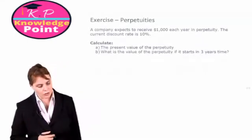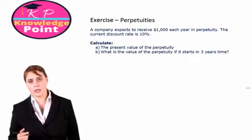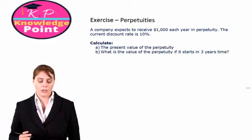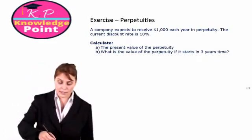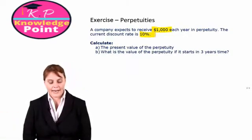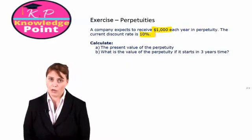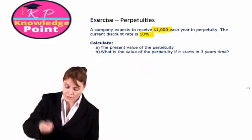A company expects to receive $1,000 each year in perpetuity. The current discount rate is 10%. So, for part A, we just need to calculate the present value of this perpetuity.